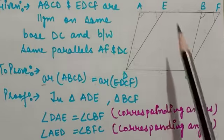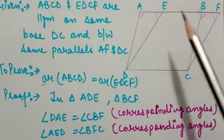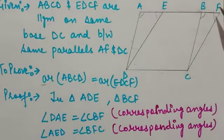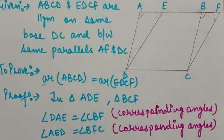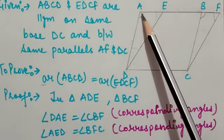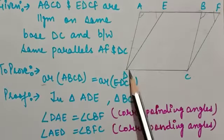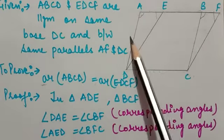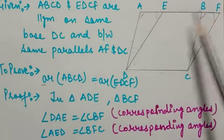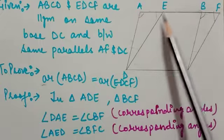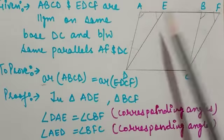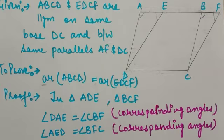For congruency, I choose triangles ADE and BCF. We need three elements for congruency. Since the two parallelograms are given, opposite sides are parallel. So angle A and part of angle B are equal as corresponding angles. Similarly, angle E and angle F are also equal as corresponding angles.